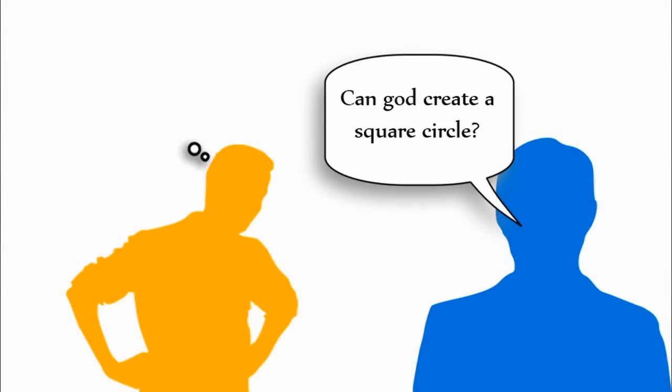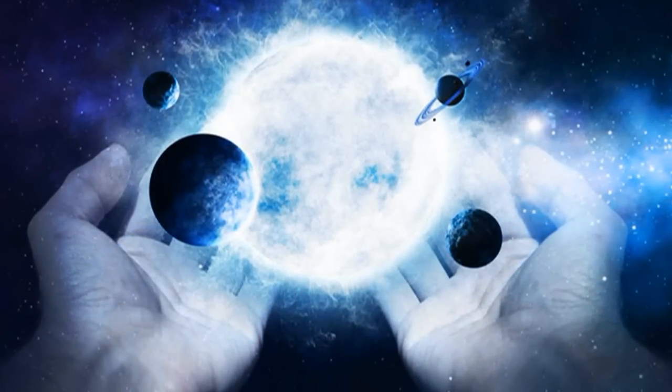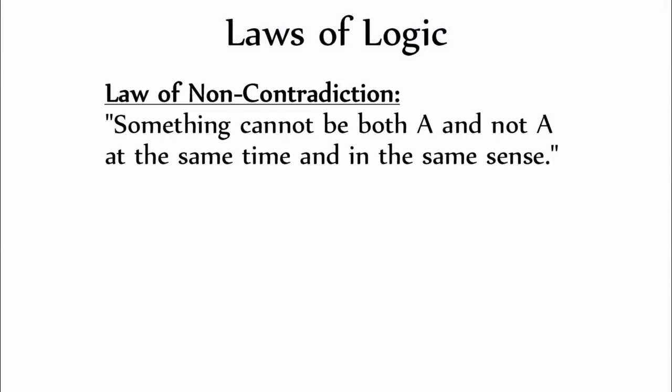This question puts them in a difficult position. If God is omnipotent, meaning all-powerful, then God should be able to do anything. However, by the following laws of logic we know, something cannot be both A and not A at the same time and in the same sense, as stated by the law of non-contradiction.